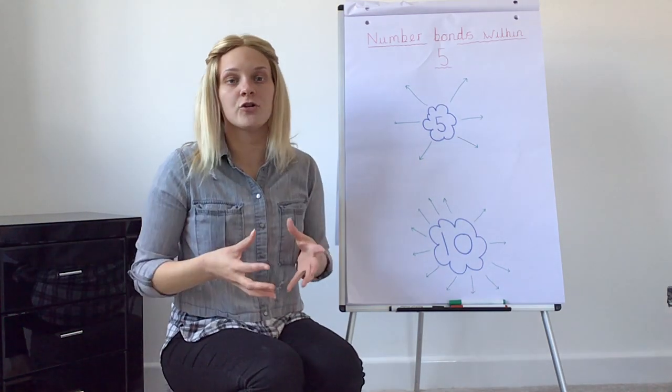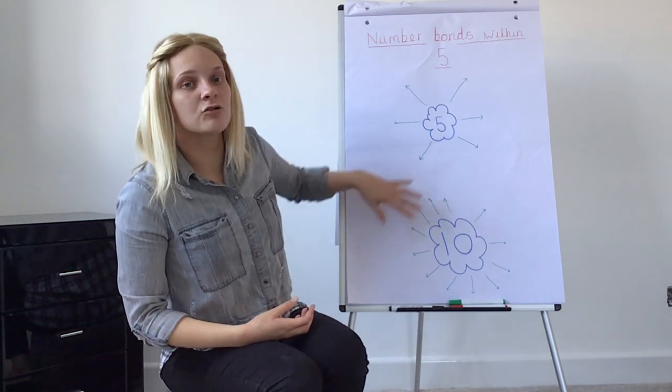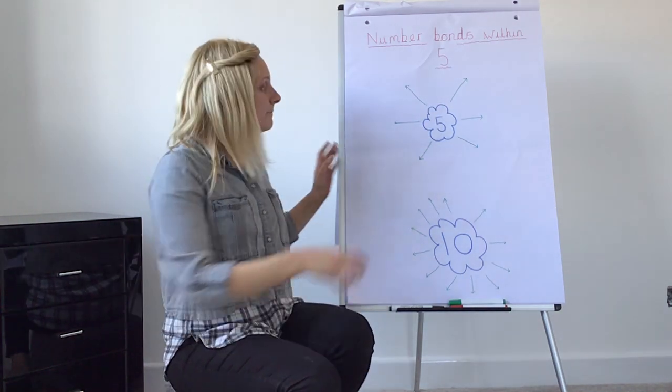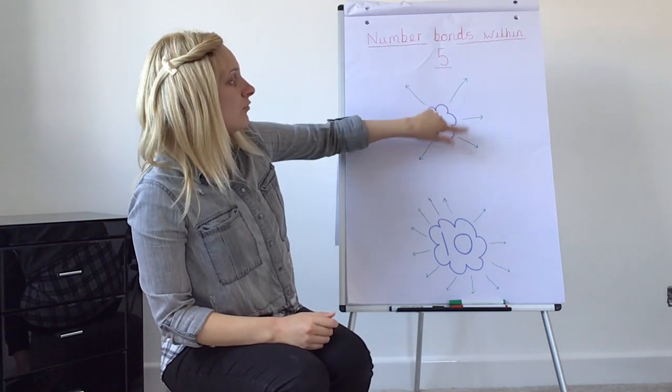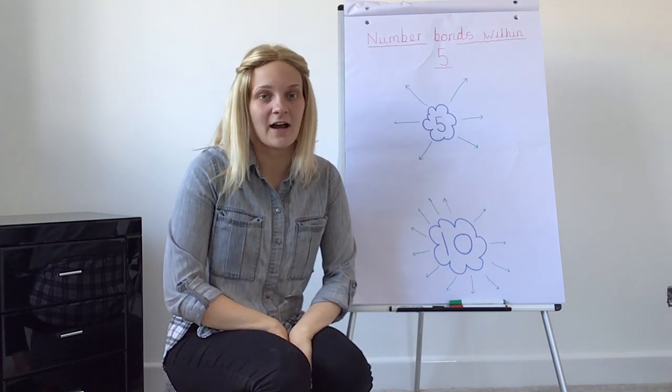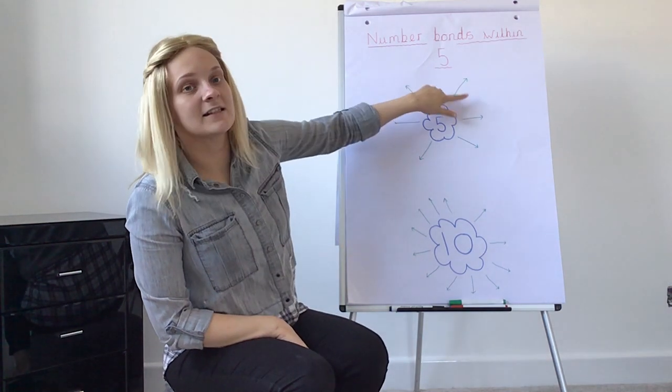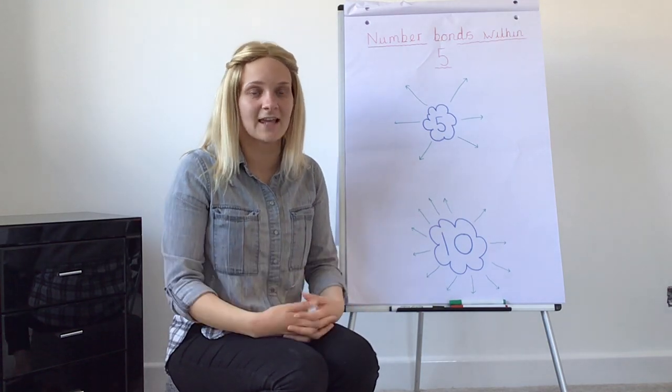We're going to look for all the number bonds to make five. What I would like you to do is draw a spider diagram. I want your number in the middle and then put some arrows around the outside. There are six ways to make five, so you need six arrows. Then I will show you how we're going to work it out practically together.